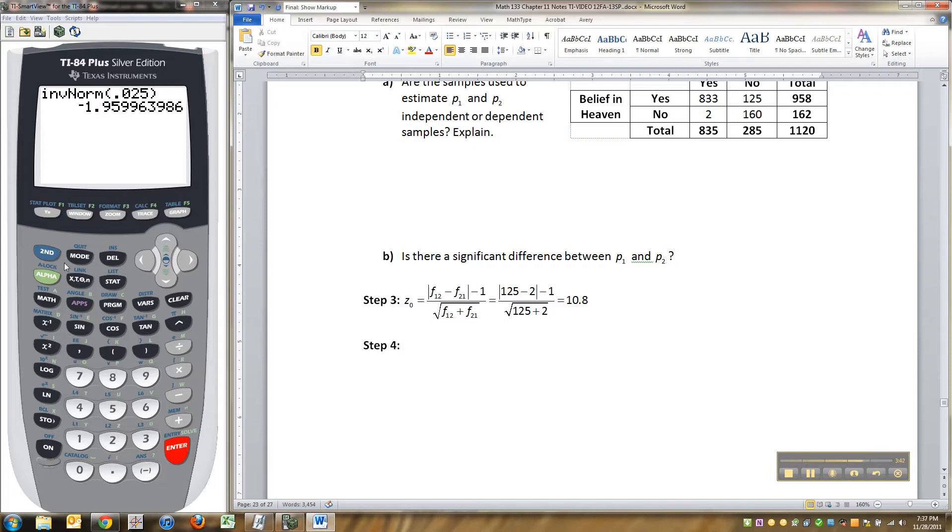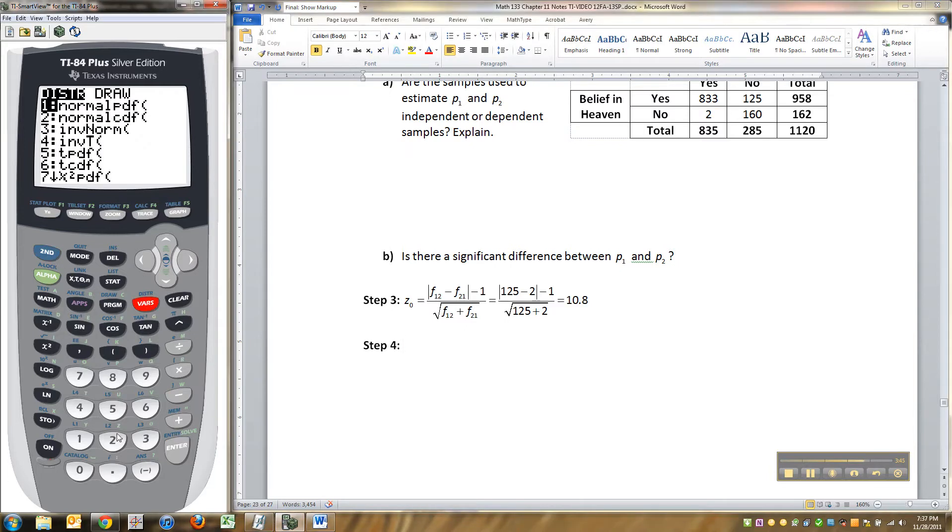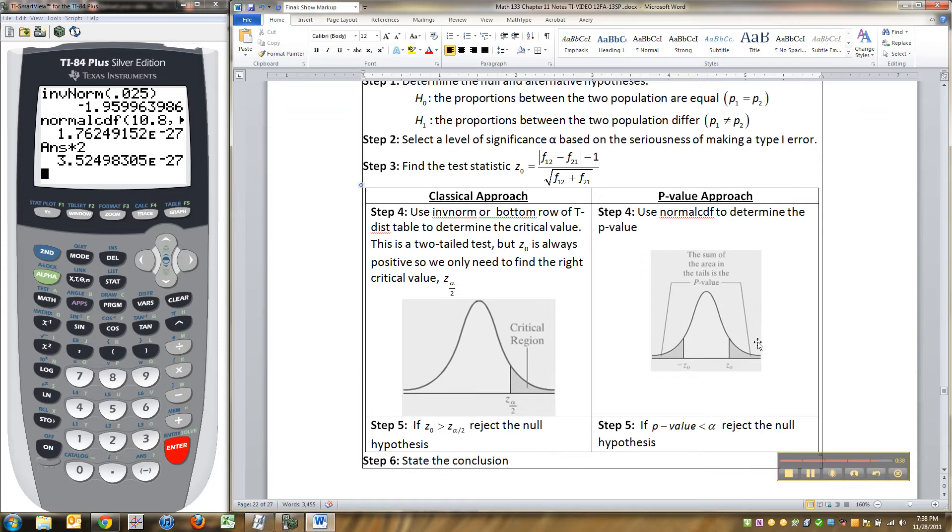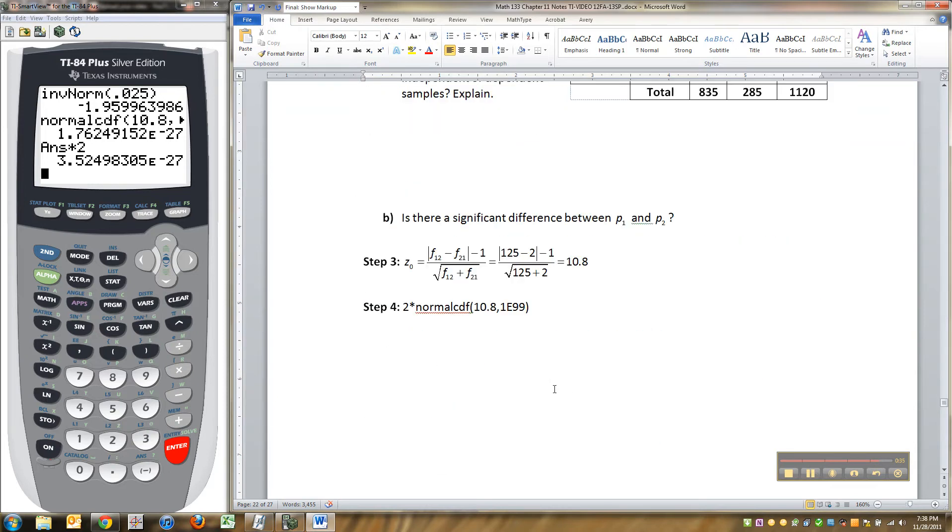I'm going to take the normal CDF, right, and I want to go from 10.8 to forever, 1e99. And I've got that value, and I can multiply it by 2 because it's a two-tailed test. So, you're really doing 2 times normal CDF from 10.8 to forever, right? That finds the area in the tail, and then you multiply it by 2 in order to make a two-tailed test because that's what this is, a two-tailed test. You found this area, and then you multiply it by 2. Either way, it's really darn small in this particular instance because it's 3.5e negative 27.